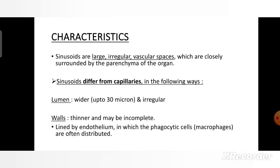Characteristics of Sinusoids: Sinusoids have large irregular vascular spaces which are closely surrounded by the parenchyma of the organ. Sinusoids differ from capillaries in the following ways. First is lumen, which is wider — up to 30 microns — and irregular. Walls are thinner and may be incomplete, and they are lined by endothelium in which phagocytic cells called macrophages are often distributed.